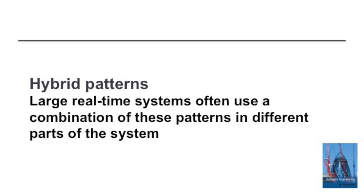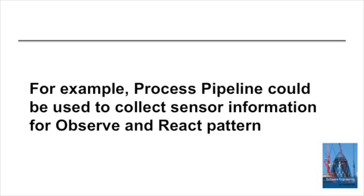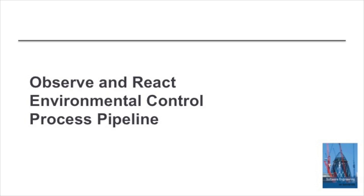We use this type of architecture in situations where we have to collect data very quickly. In many systems the architecture is actually a hybrid, where more than one of these patterns is used. For example, an Observe and React pattern might have a Process Pipeline pattern in front of it to collect fast-arriving sensor data, which is then analysed and used to react. In summary, perhaps the majority of real-time systems fit into one of these three stereotypical architectural patterns: Observe and React, Environmental Control, and Process Pipeline. These are a good place to start when thinking about and designing the architecture for real-time systems.